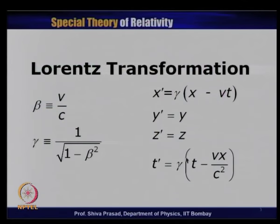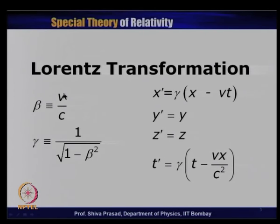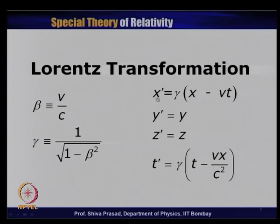Just to recapitulate, let us discuss the Lorentz transformation again. We had introduced two symbols: beta, which is v divided by c, where v is the relative velocity between the frames and c is the speed of light. Then we defined another parameter called gamma, which is 1 upon under root of 1 minus beta squared.